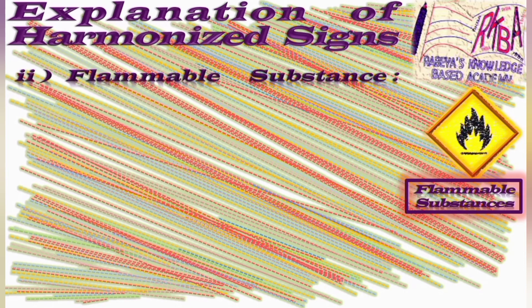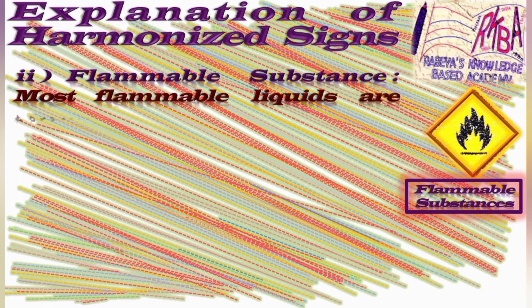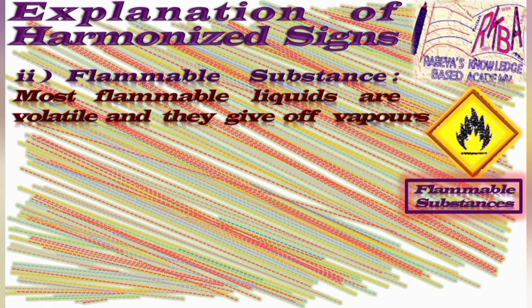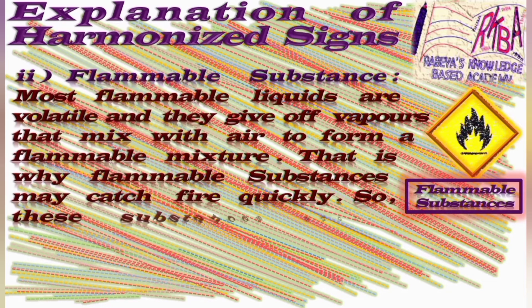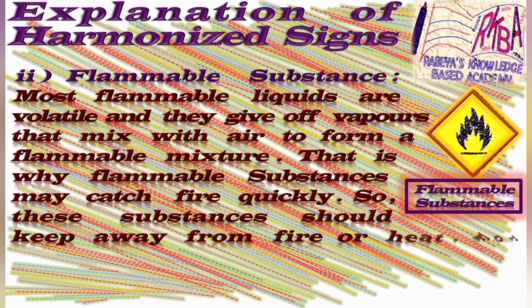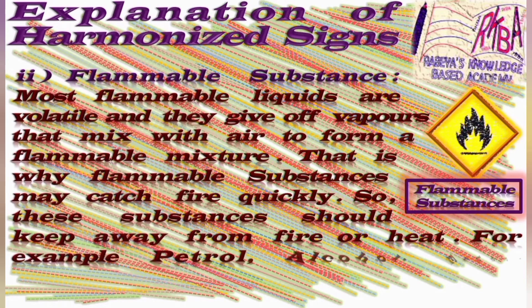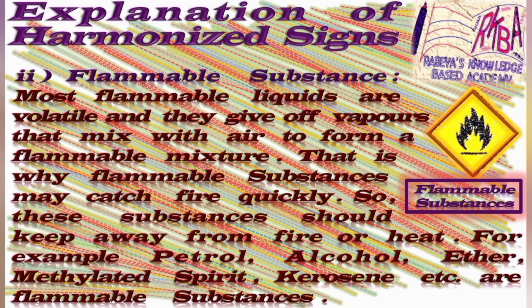The second one is flammable substances. Most flammable liquids are volatile and give off vapors that mix with air to form a flammable mixture. That is why flammable substances may catch fire quickly, so these substances should be kept away from fire or heat. For example, petrol, alcohol, ether, methylated spirit, kerosene, etc. are flammable substances. In this slide, a sign of a flammable substance has been added, which is a figure of a flame.